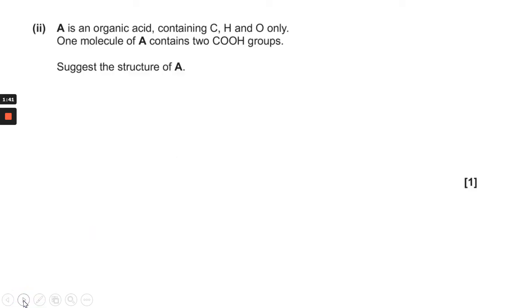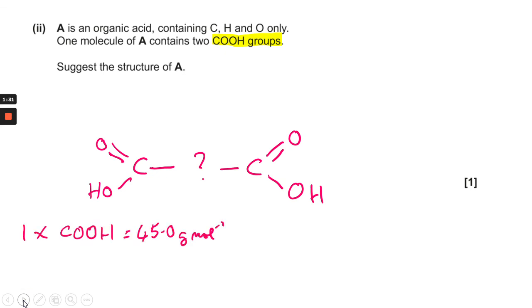The second part of the question asks you to suggest a structure for A. It says it's got two COOH groups, so essentially you need to work out what goes between them. So the information you have enables you to work out that one COOH group or carboxylic acid group is 45.0 grams per mole. Obviously two of those are going to be 90 grams per mole.